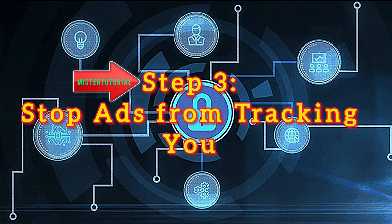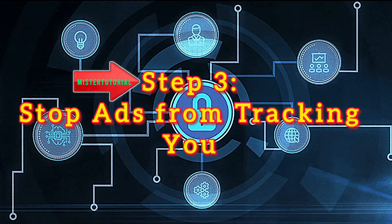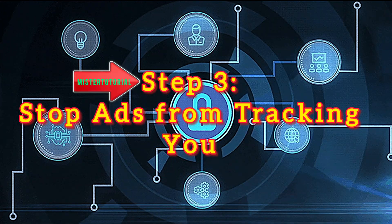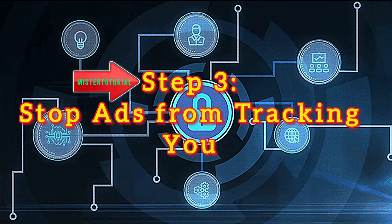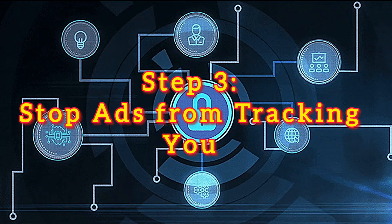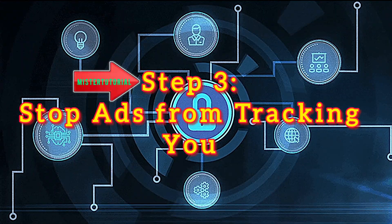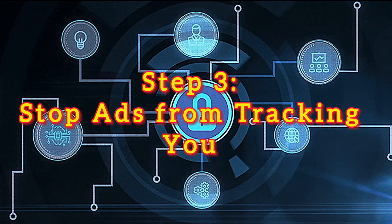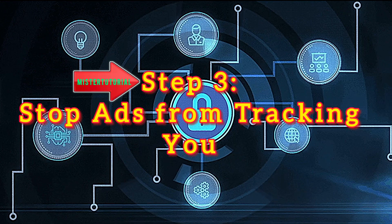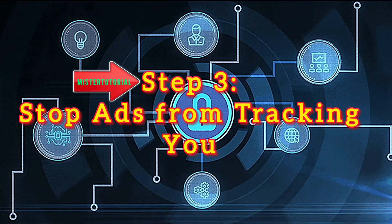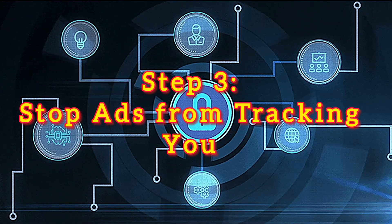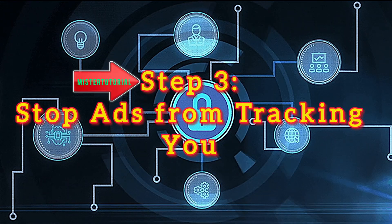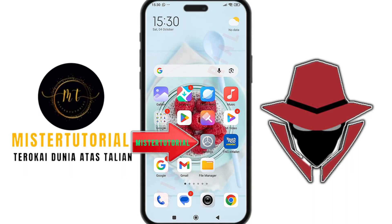Step three: stop ads from tracking you. Have you ever talked about something near your phone, only to see an ad for it minutes later? That's because Google uses your microphone and other data to serve you targeted ads. Your phone is constantly listening for keywords in your conversations and then using that information to tailor advertisements. For example, if you mention needing new running shoes, you might suddenly start seeing sneaker ads on social media or in your browser.